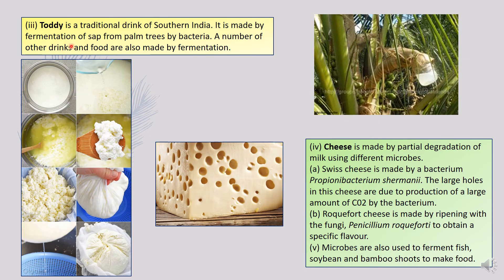Next is Toddy, a traditional drink of Southern India. It is made by fermentation of sap from the palm tree by bacteria. A small incision is made in the palm plant, a container is tied to it, and the sap collects over several hours. As it ferments, it transforms into alcohol and is consumed as a traditional drink.